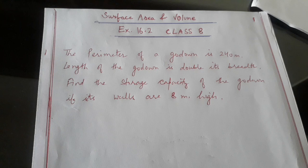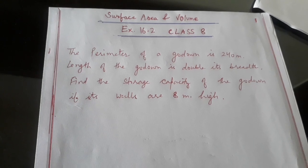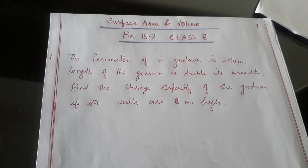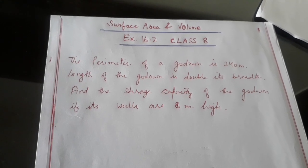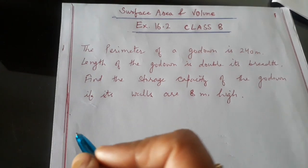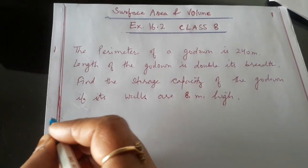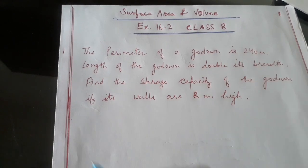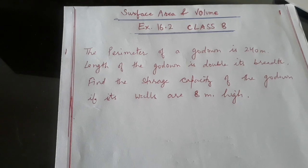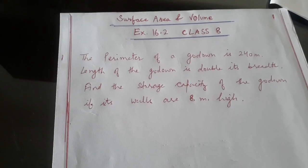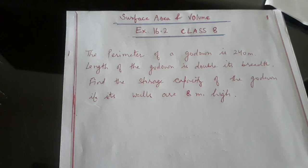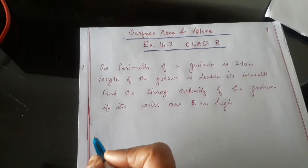Welcome to Math is Easy. We are doing surface area and volume, exercise 16.2 of class 8 Mathematics Success — that is the chapter name of the book, and the chapter is surface area and volume. The question is: the perimeter of a godown is 240 meters, the length of the godown is double its breadth. Find the storage capacity of the godown if its walls are 8 meters high.